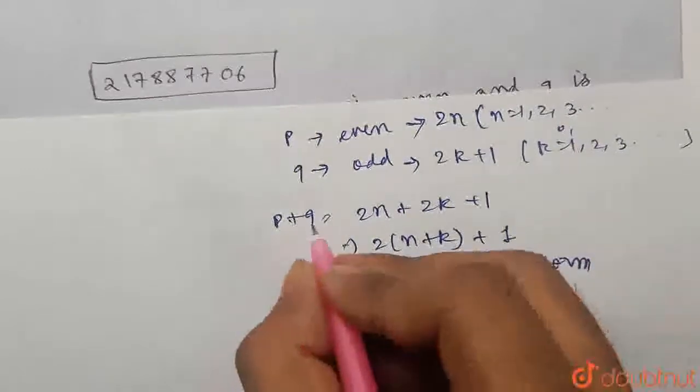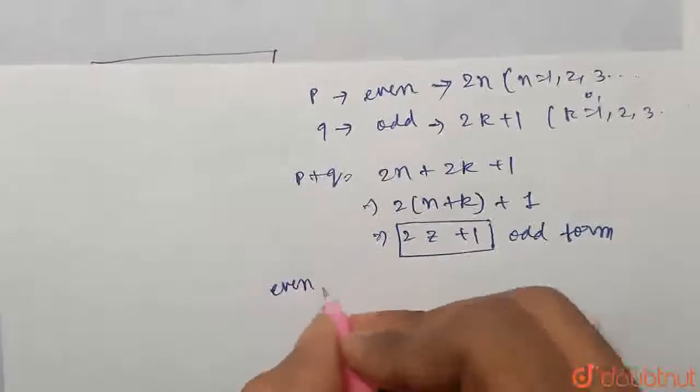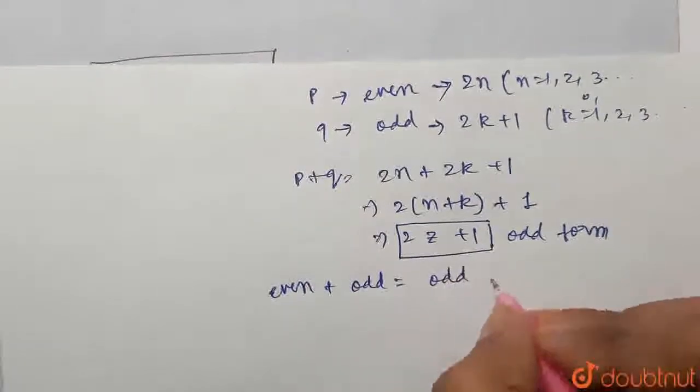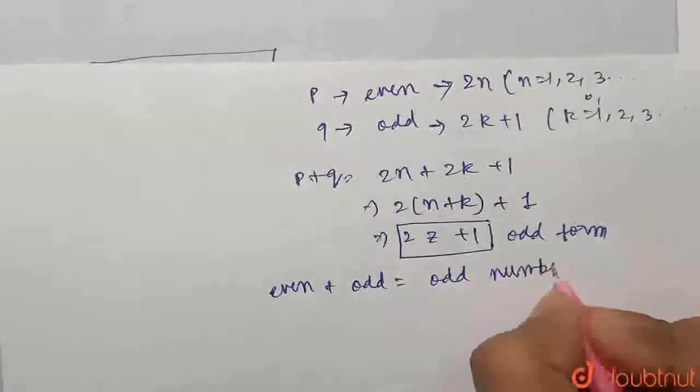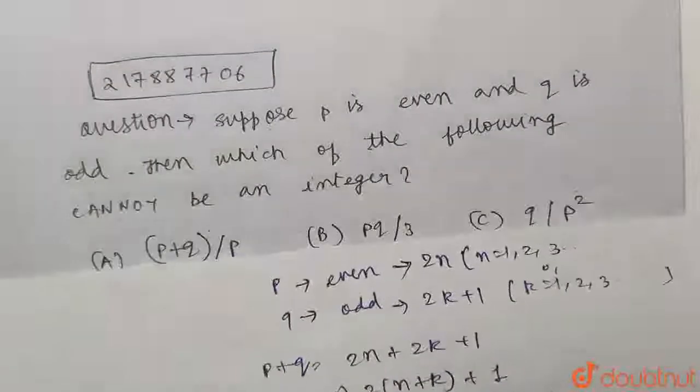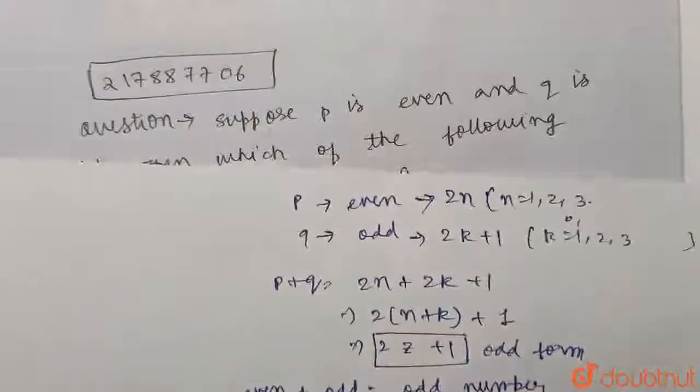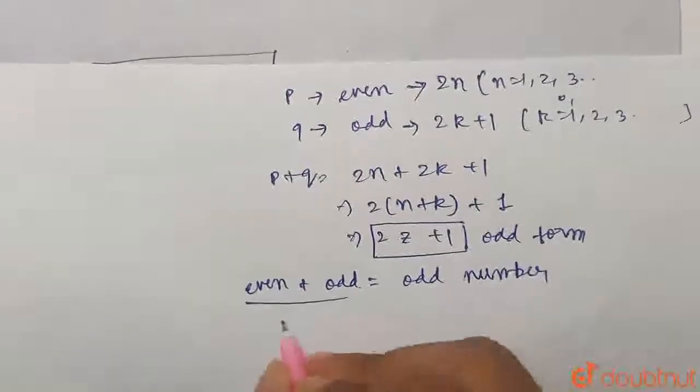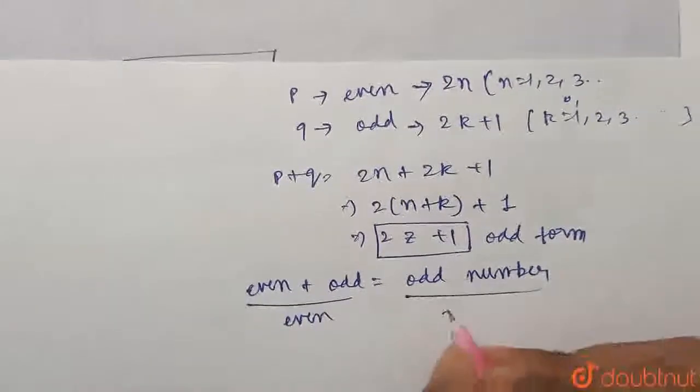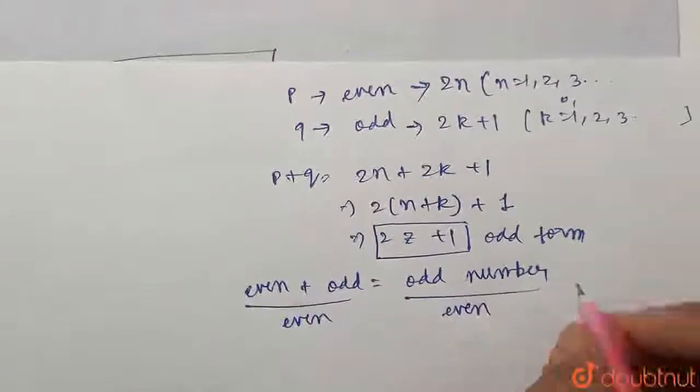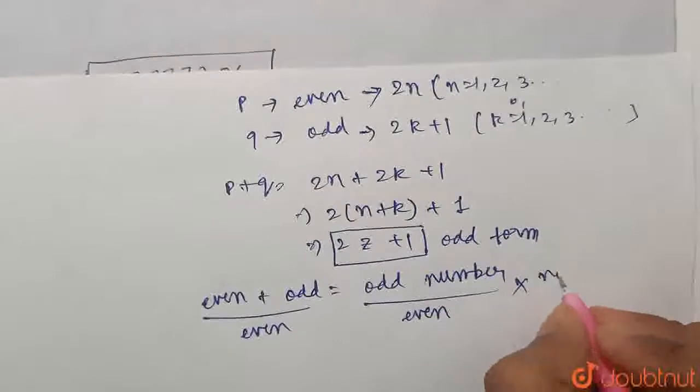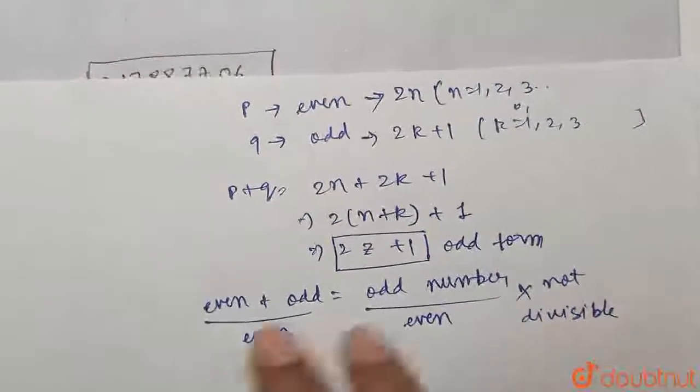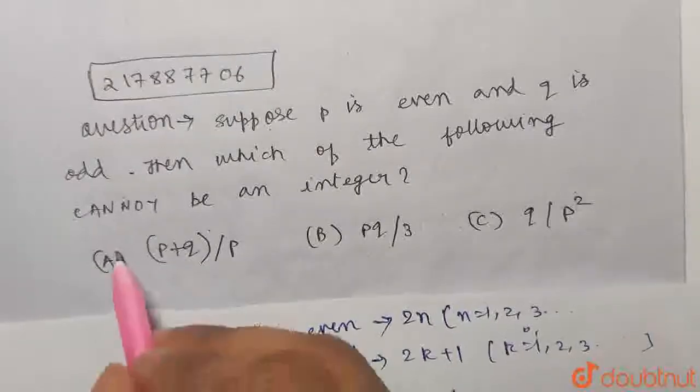So P plus Q, even plus odd will always equal an odd number. Now let us say that P plus Q is divided by P. So what is P? P is even. So obviously if you divide odd number upon an even number, this will never be divisible. Obviously because any odd number cannot be divisible by any even number. So option A cannot be an integer.